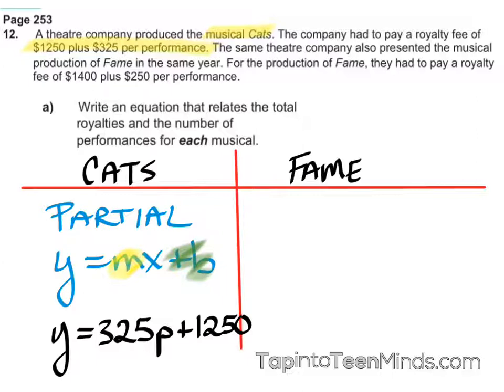And then our $1,250 — why is the $1,250 there? Where does $1,250 come from, Sophia? Because that's the initial cost that you're having to pay. Awesome. Initial cost from before you even perform this show, so you've got to pay that upfront.